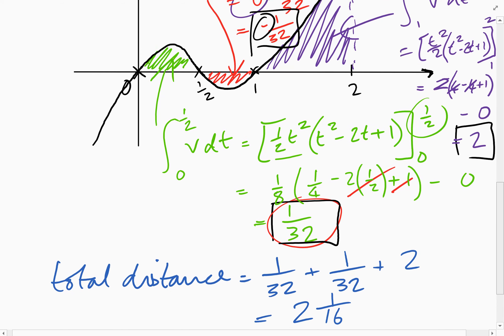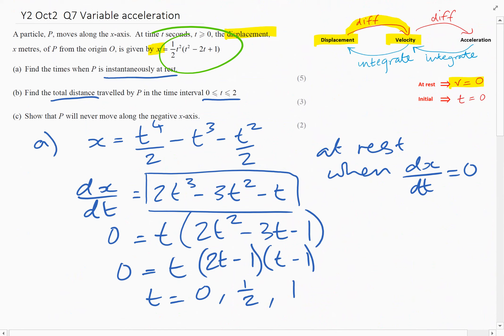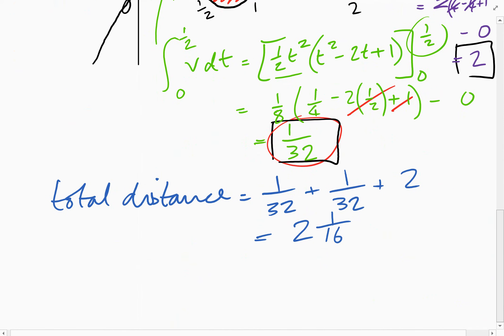The last part of the question, the question is saying, show that P will never move along the negative X axis. In other words, you need to show that X can never be negative here. So if we look at this equation up here, we need to show somehow that X can never be negative. So let's just write that down. So the equation we're given in the question is X equals half T squared times T squared minus 2T plus one. Now, how do we show that X is always positive?